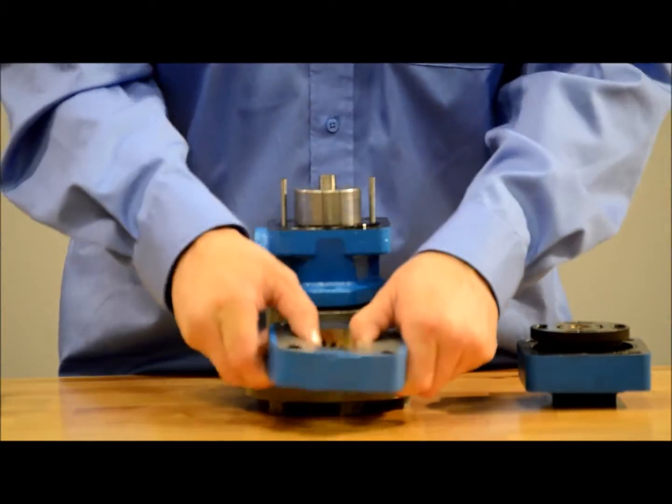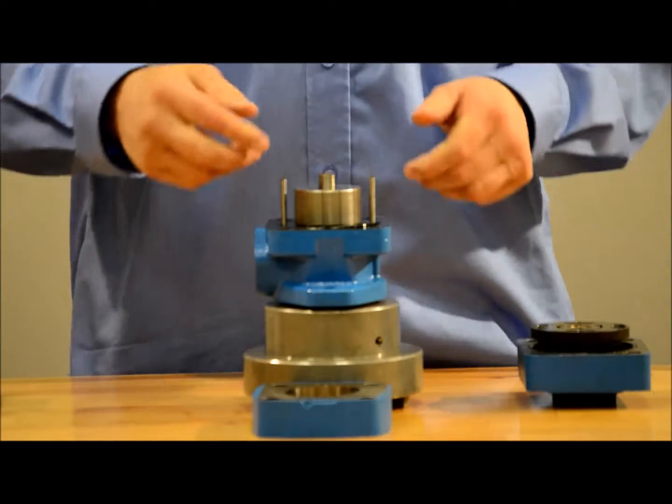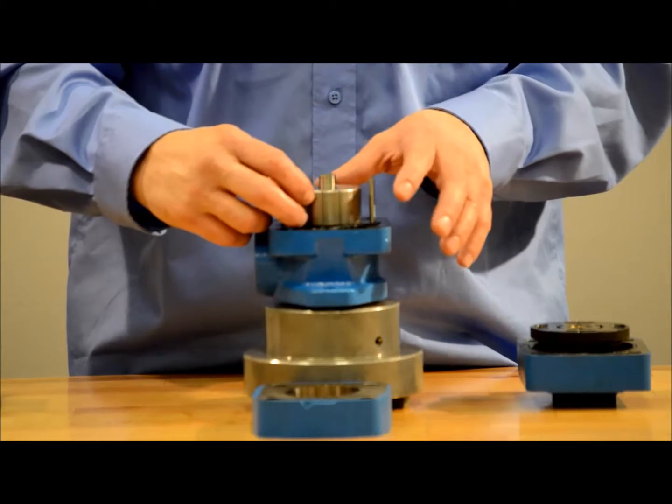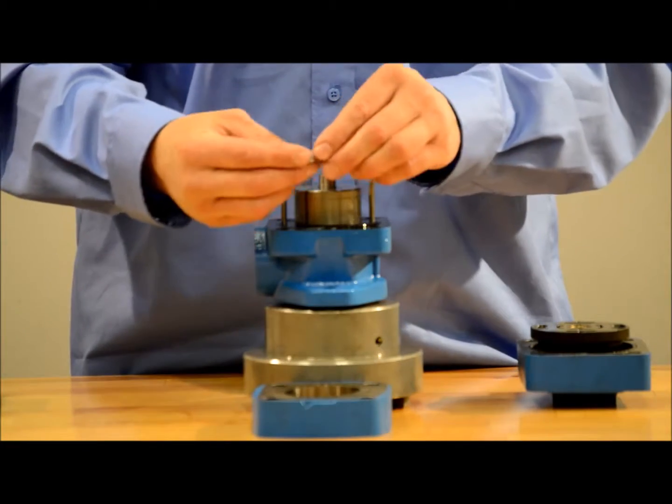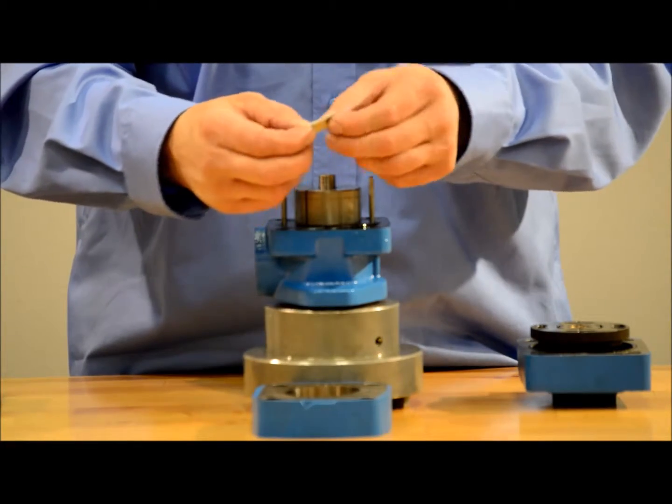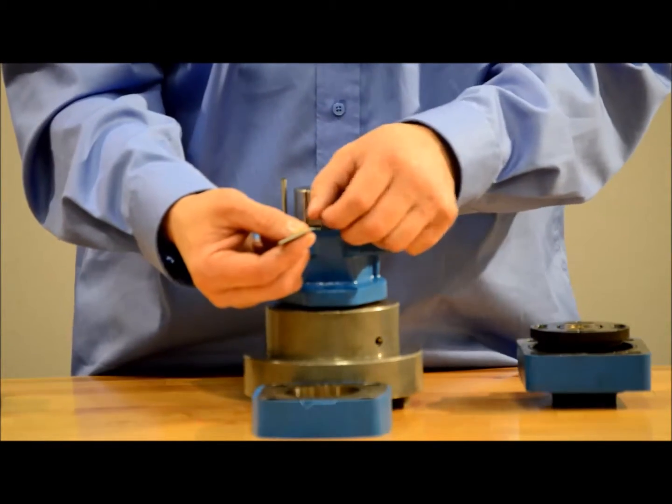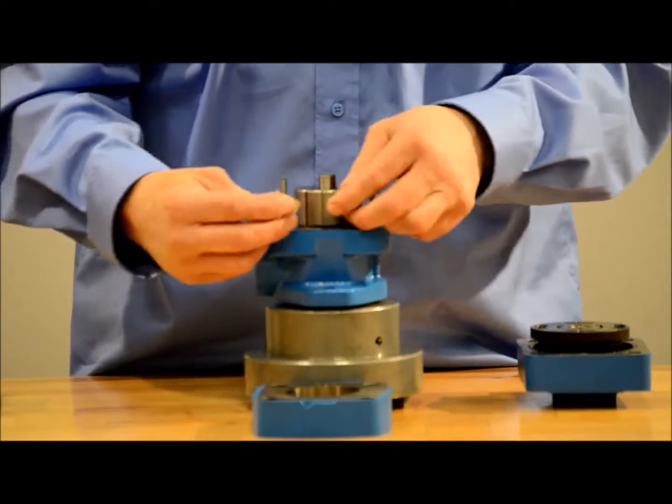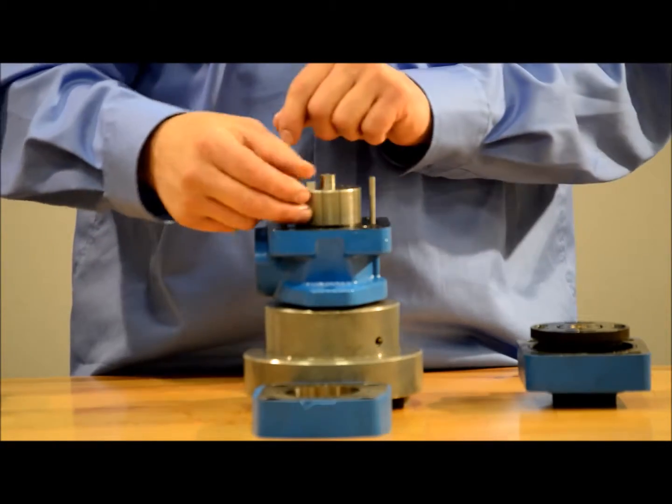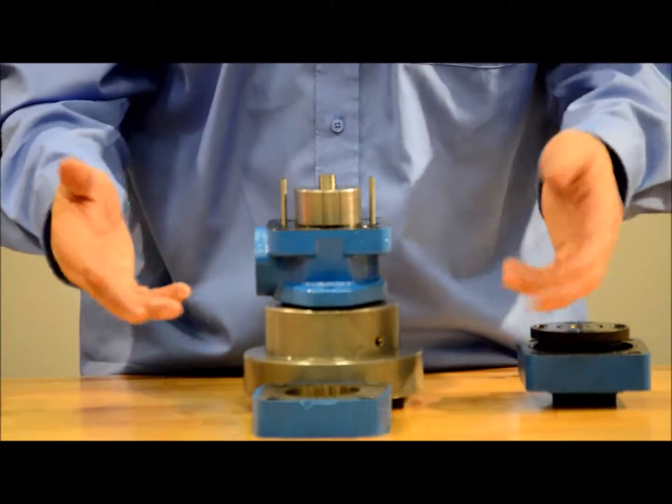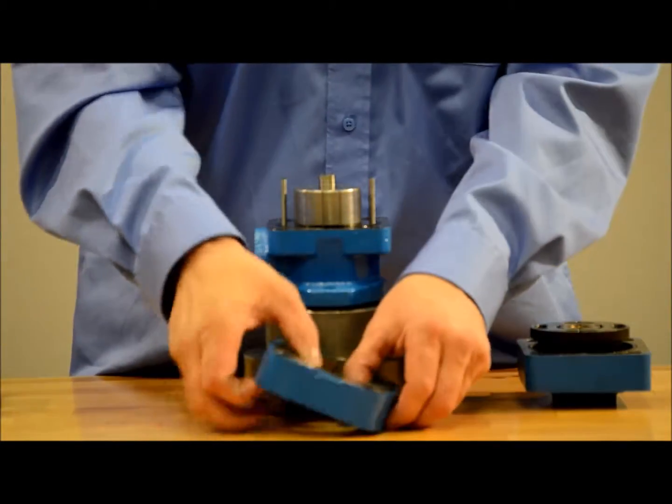So once we have the cam ring off, if you have some vanes that fall out or drop out of the rotor while you have that out, they can easily be reinstalled because they are rounded on one side and flat on the other. The flat edge goes towards the inside of the pump or towards the shaft, and the rounded edge is going to ride along this cam ring here. So if they fall out, really don't worry, no panic.